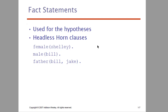Headless horn clauses. For example, female of Shelly — so this is how we can conclude: Shelly is female. Then male of Bill — that is, Bill is male. Shelly is female. Father of Bill and Jake — Bill is a father of Jake. So this is a function, it is a structure, and it is a parameters list. We can use this for hypothesis — we have to derive a conclusion. This is headless horn clauses.